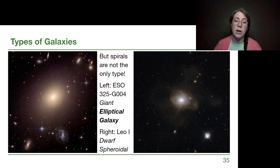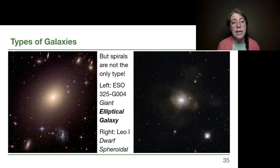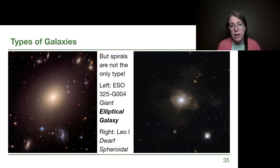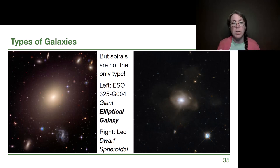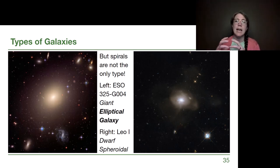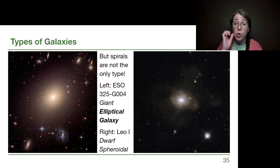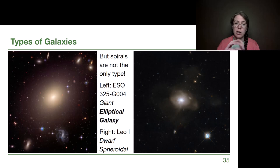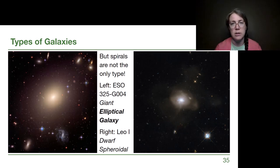Spirals are not the only type of galaxy — the other main category is the elliptical galaxy. Giant elliptical galaxies can get much bigger than the Milky Way, and they tend to form from mergers of similar-sized galaxies where all the gas and dust is used up or lost and the disk shape is disrupted, leaving just a blob of stars. Dwarf spheroidal galaxies are the smaller version — elliptical and spheroidal both describe a galaxy without a flattened disk, just a blob of stars.